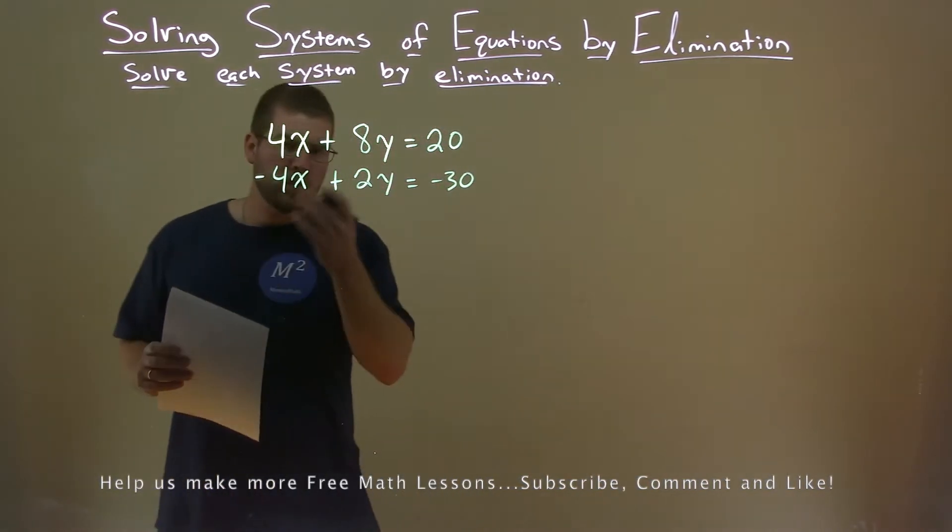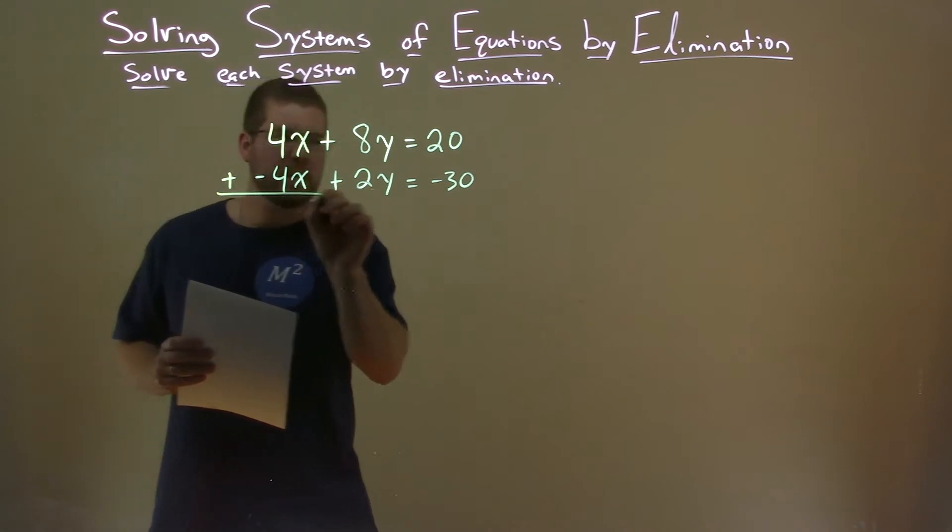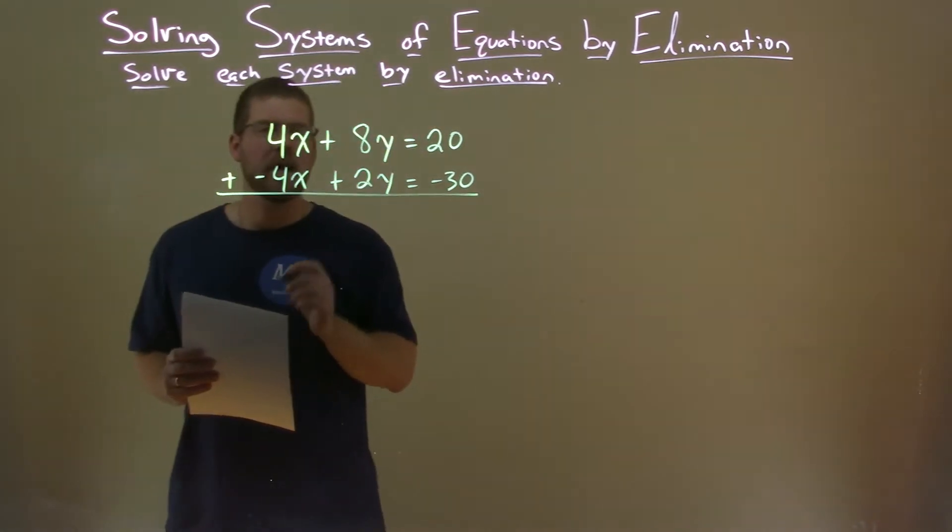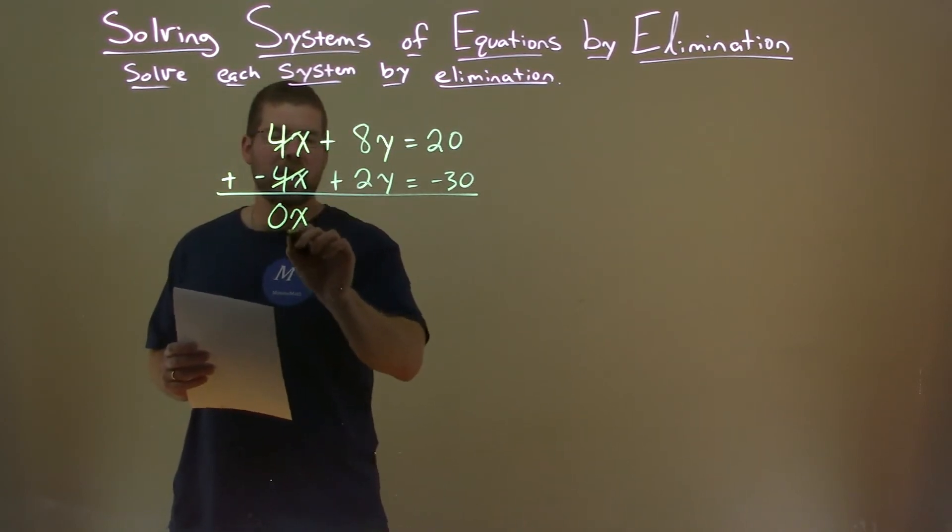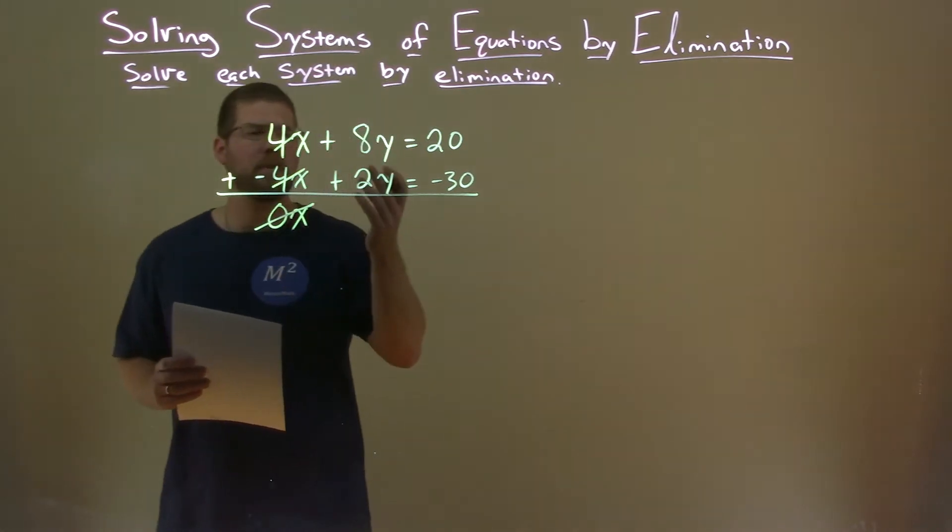First step here is I'm going to add the two equations to each other. This will eliminate 4x plus negative 4x. It eliminates the x values, 0x, which we don't really need to write.